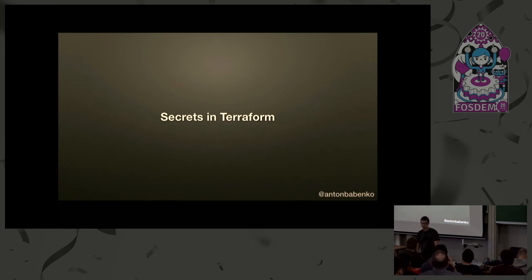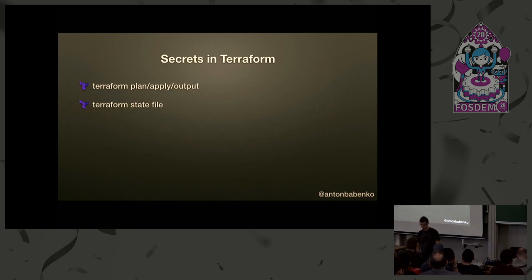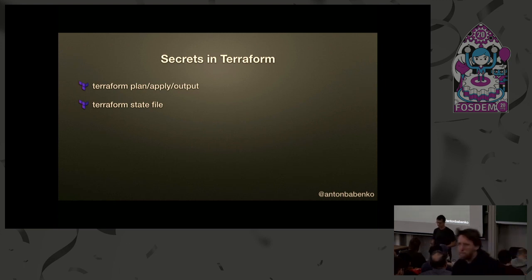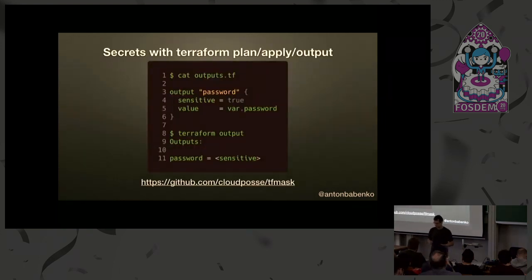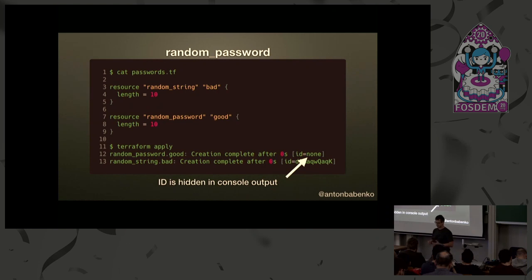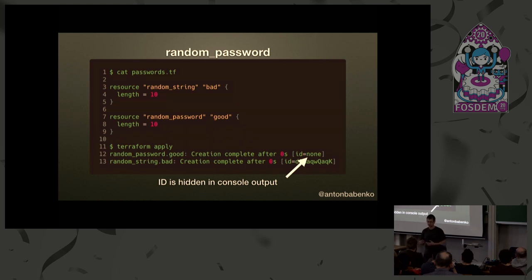Secrets in Terraform are still a problem even in 0.12. There are two types: secrets inside plan, apply, and output — and secrets in Terraform state, where whatever you put will end up stored. For the first type, when outputting a password you can mark it as sensitive, which will mask it. There's also a new resource called random_password that doesn't output the password value to console, making it safe for CI environments.